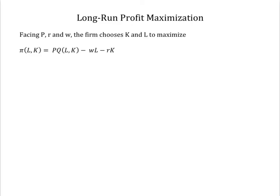Given P, R, and W, the firm chooses K and L to maximize profits as the difference between total revenue and total costs.